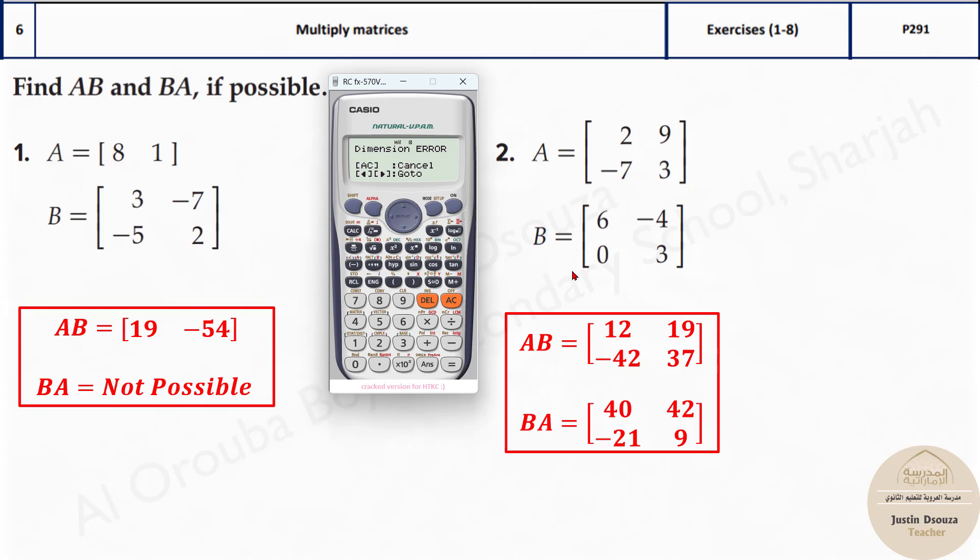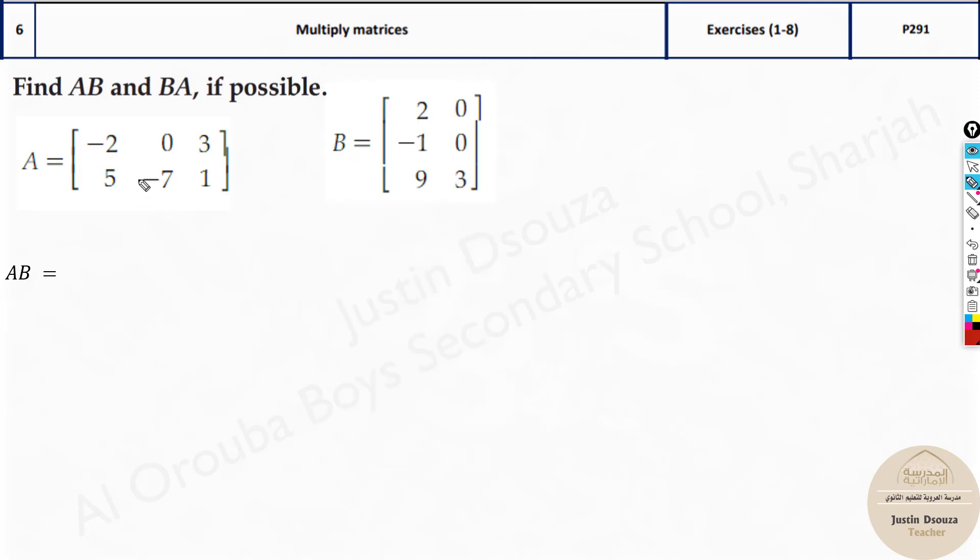I will tell you how the dimension thing works. Let's look at this one. First let's write the dimensions over here. This is 2 cross 3 and this is 3 cross 2.